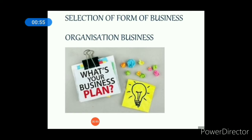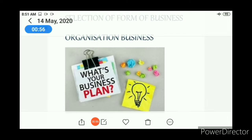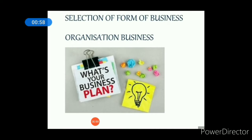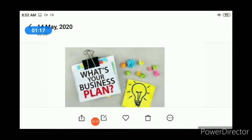अभी तक हमने five forms of business organization के बारे में study किया। First one is sole trade, second is partnership, third is cooperative society, fourth is joint Hindu family business, and fifth one is company organization. कौन सा business कैसे settle करना है, उसका formation क्या होगा, उसके merits क्या होंगे, उसके demerits क्या होंगे — each and every concept को हमने बहुत अच्छे से study किया।